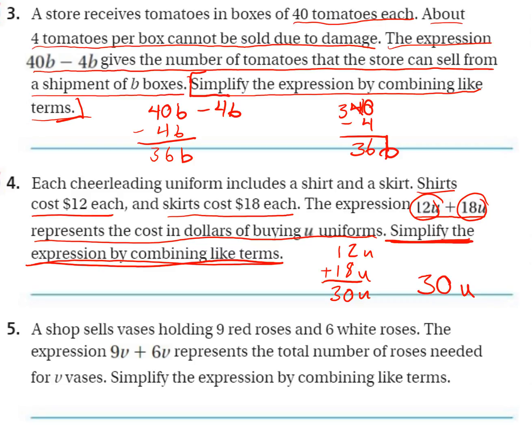Once you break it down, it's actually very simple math. Essentially the only math you're doing here is 40 minus 4 — that takes us back to second or third grade. The only thing that's different is we're adding that variable, but the variable doesn't change the math we're doing. Same thing here: essentially all we're doing is 12 plus 18, back to second grade — we're just including that variable onto it as well now.